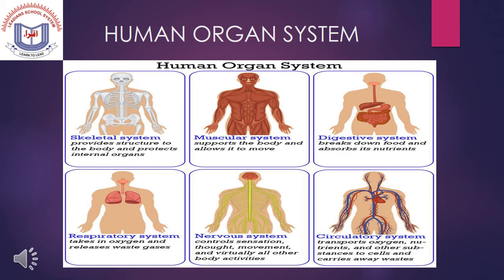The nervous system controls sensation, thought, movement, and virtually all other body activities. The circulatory system transports oxygen, nutrients, and other substances to the cells, and carries away waste. These are the six main organ systems in the human body.